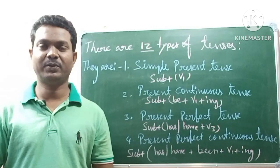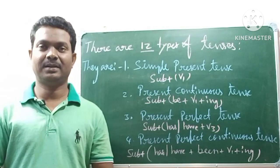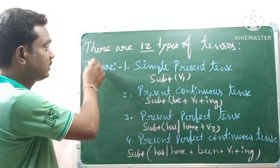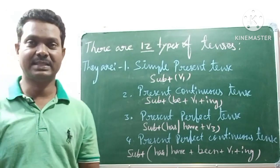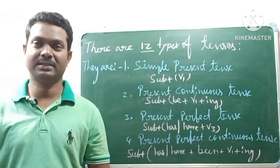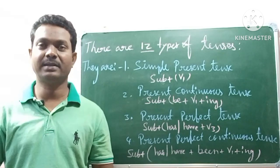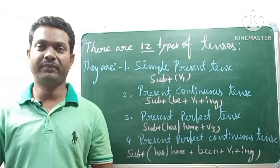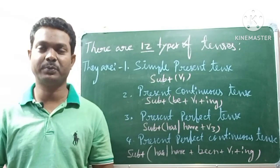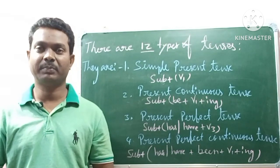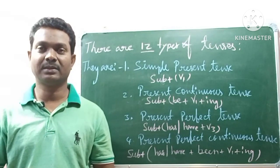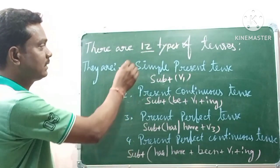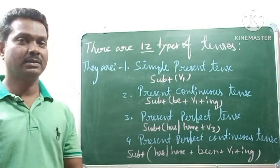Hi friends, how are you all? I hope you are good. Today we are going to learn about 12 types of tenses. We already learnt there are three main kinds of tenses: present tense, past tense, and future tense. Every type of tense may be subdivided into four types: simple, continuous, perfect, and perfect continuous. So totally, four threes are 12 types of tenses.